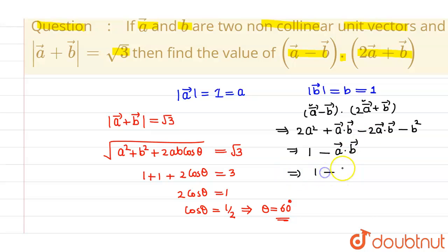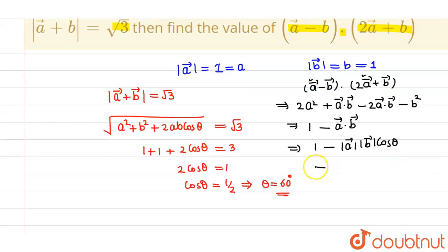As we know, the value of A vector dot B vector is magnitude of A vector, magnitude of B vector into cos of theta. So this will be 1 into 1 into the value of cos theta is 1 by 2. So 1 minus 1 by 2 comes out to be 1 by 2. This is our answer.